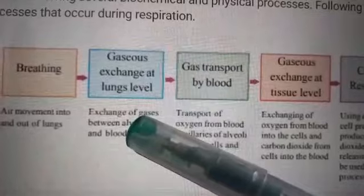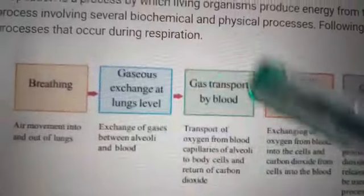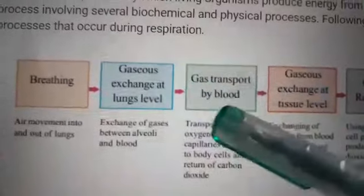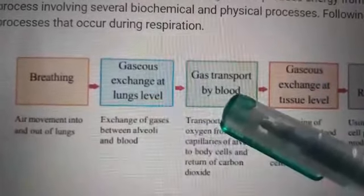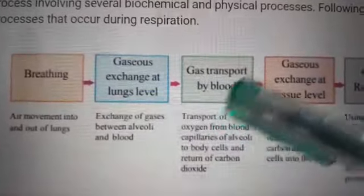From the alveolus, oxygen is delivered into the blood, and blood which carries carbon dioxide gives it to the alveolus. So, at the lung level, gaseous exchange between the lungs and blood takes place. Then, the oxygen-rich blood is transported through the blood to tissues.